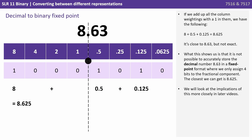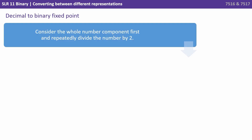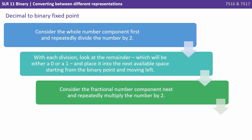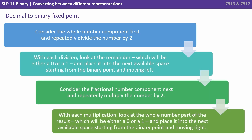We'll look at the implications of this more closely in later videos. To summarise the decimal to binary fixed point conversion: consider the whole number component first and repeatedly divide by 2, placing each remainder (0 or 1) into the next available space from the binary point moving left. Then consider the fractional component and repeatedly multiply by 2, placing the whole number part (0 or 1) into the next available space from the binary point moving right.